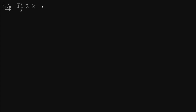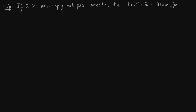In this lecture I want to talk about reduced homology. To talk about reduced homology we first need to discuss the homology of a path-connected component. If X is non-empty and path-connected, then the zeroth homology group of the space is nothing but the ring of integers Z. Thus, for any space X, the zeroth homology group is nothing but the direct sum of these integers Z, one for each path-connected component.